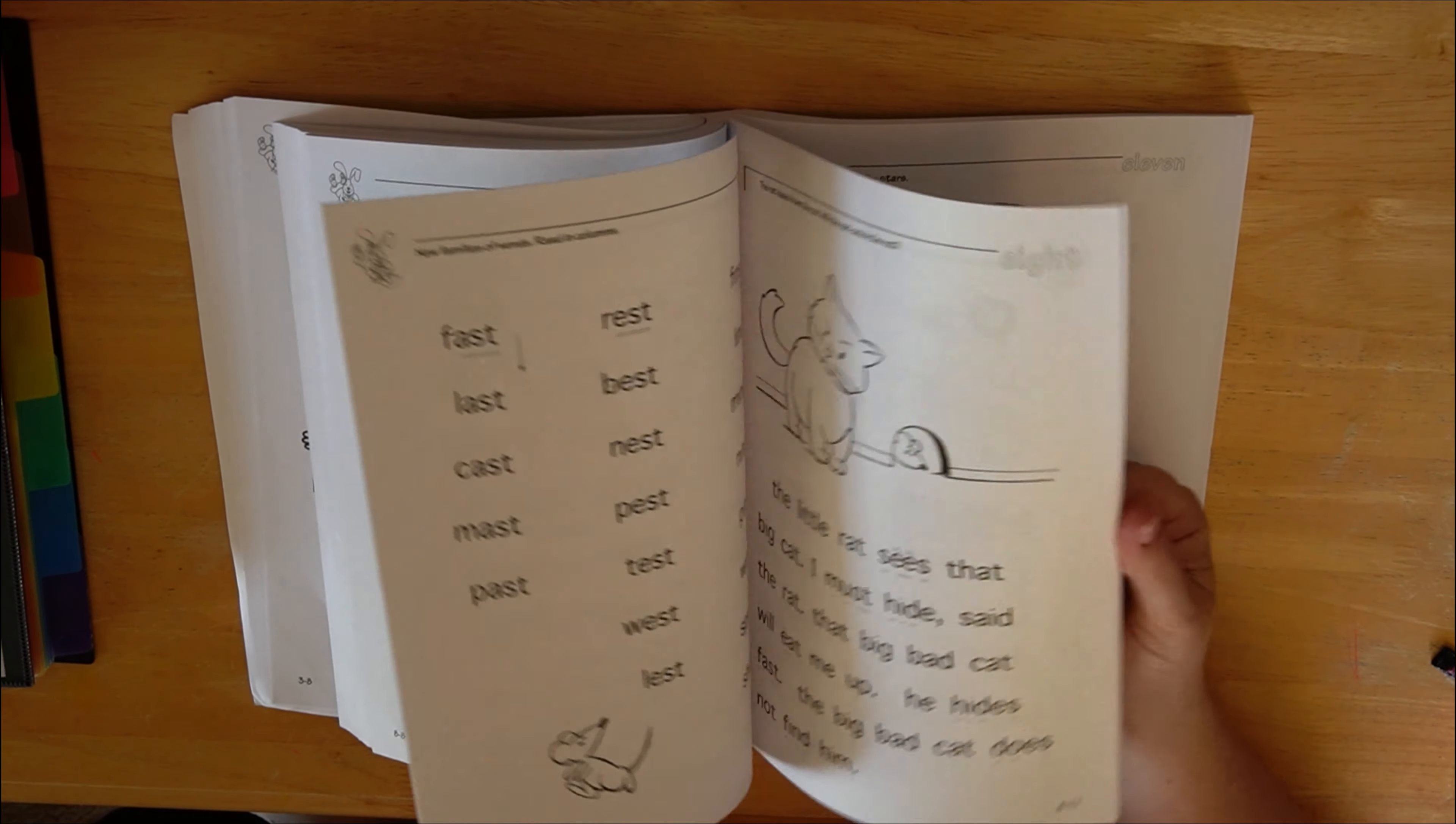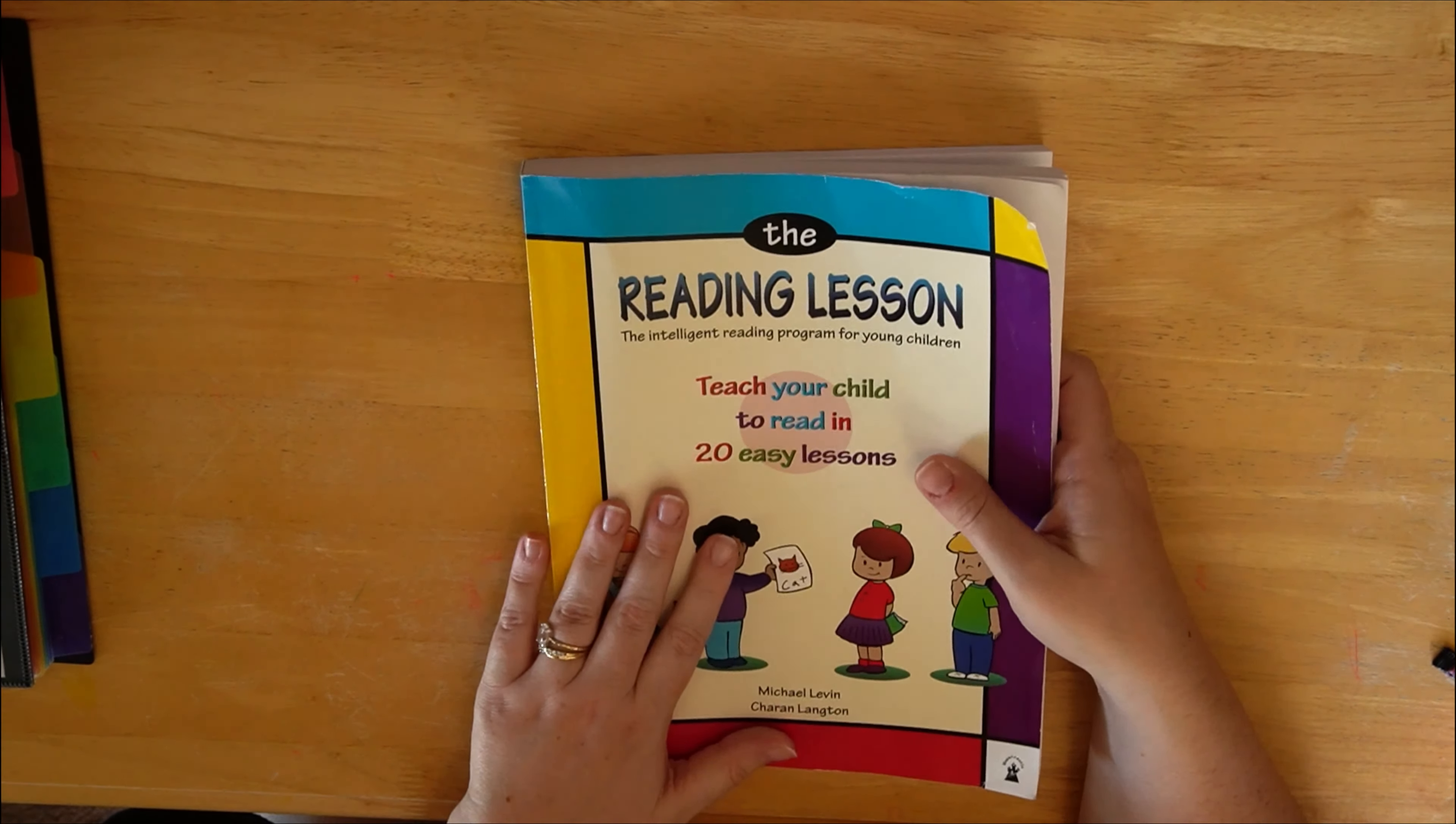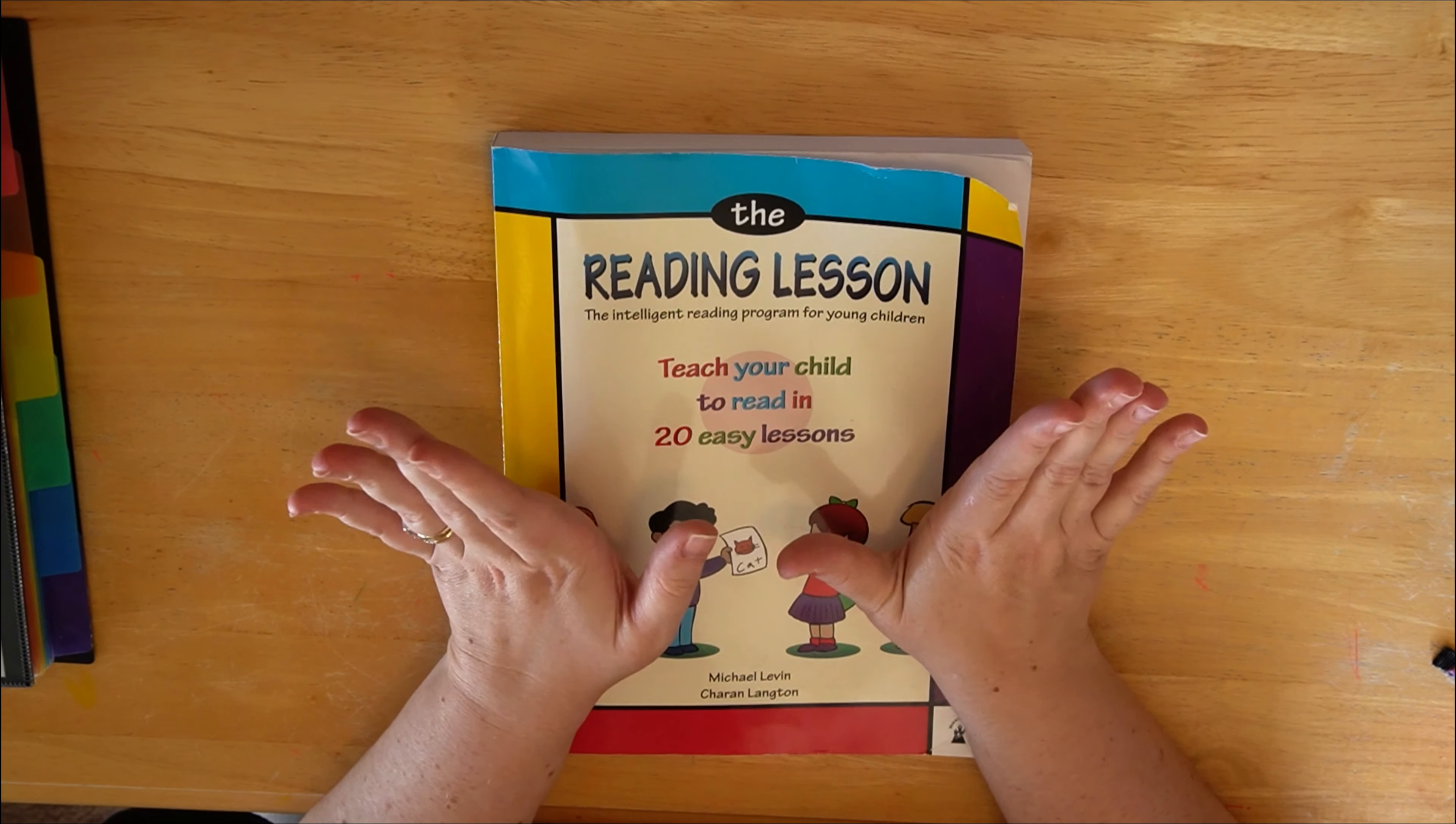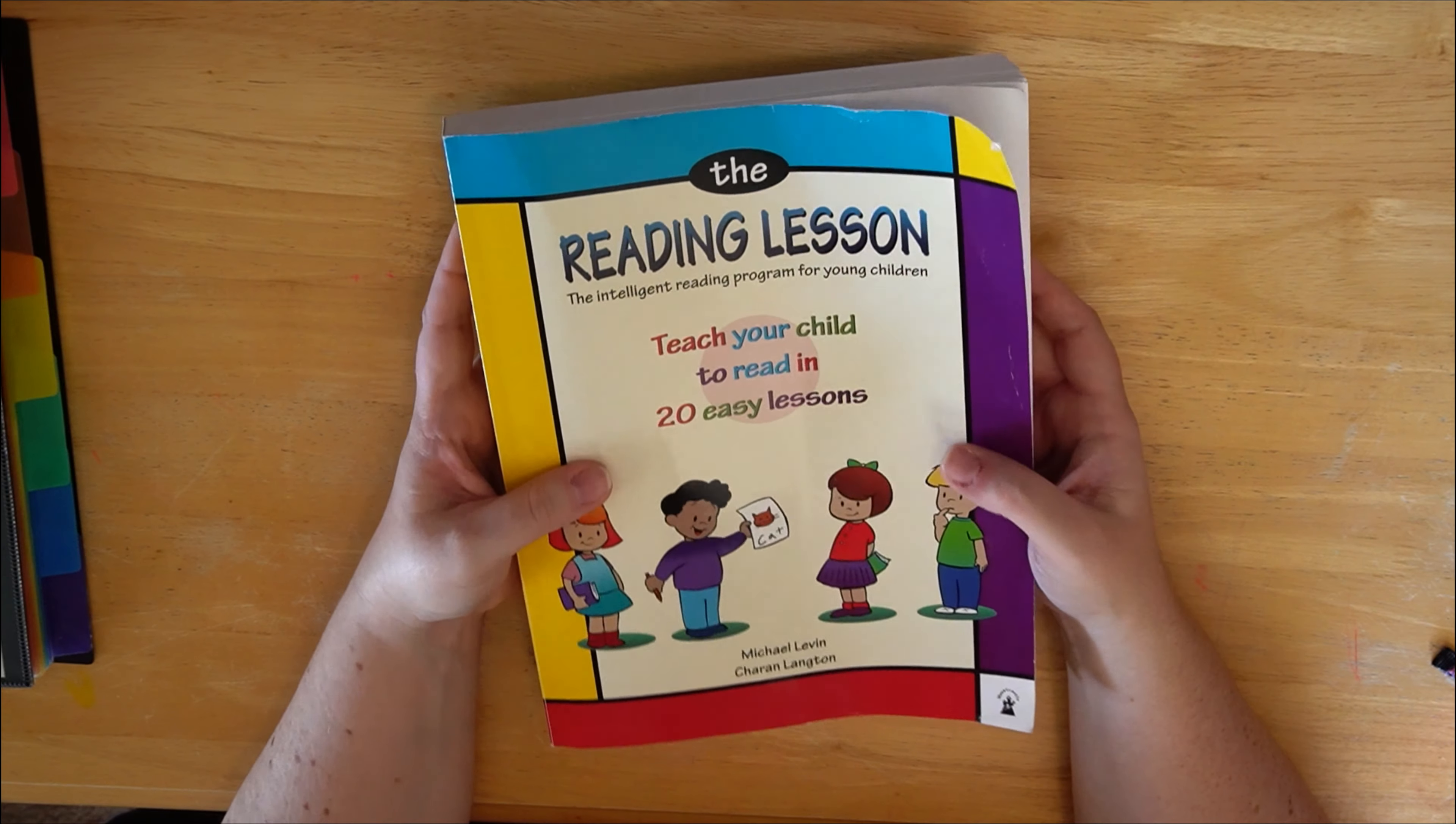And I just, like I said guys, I can't recommend it enough. Love this. And I would get the spiral bound, that way you only have to buy one copy and then just make copies of the worksheets. But yeah, that is everything for our kindergarten curriculum.